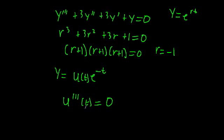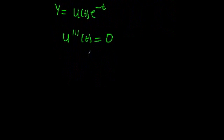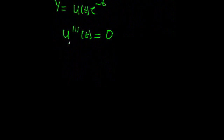So now if we want to try and figure out u, we have to take the indefinite integral of both sides three times. Each time bearing in mind that we're going to get an additional constant of integration. So if we integrate once, we're going to get that the second derivative of u is equal to a constant a. If we integrate another time, we're going to get the first derivative is equal to at plus another constant of integration b.